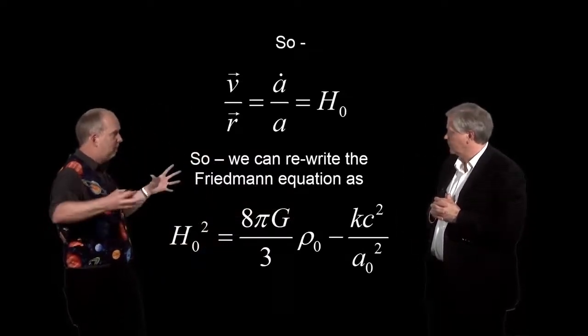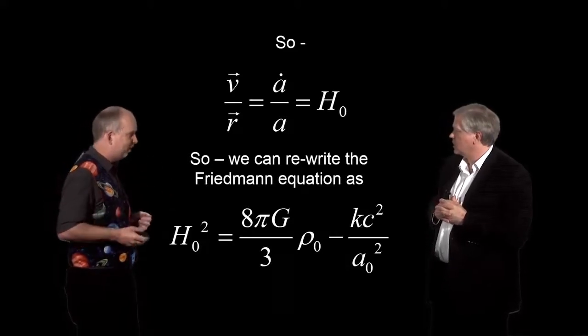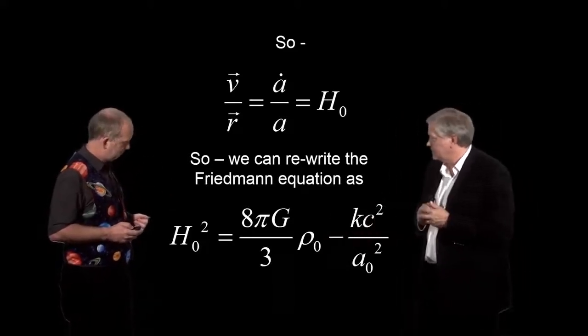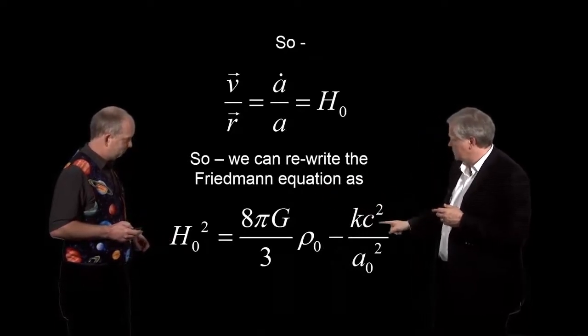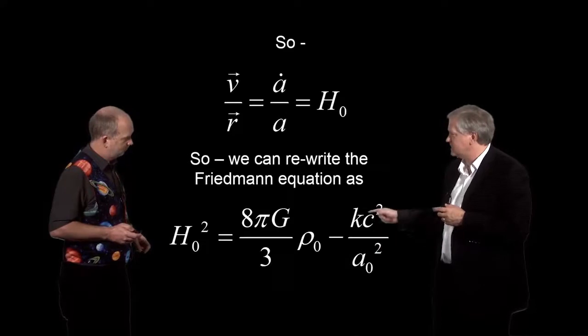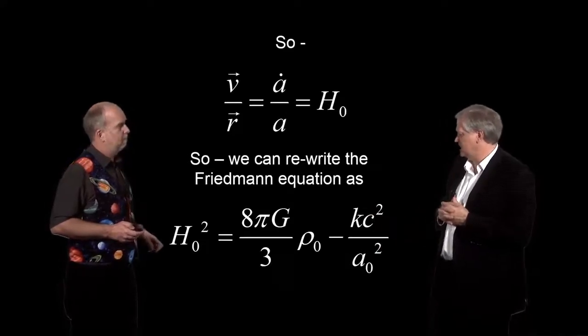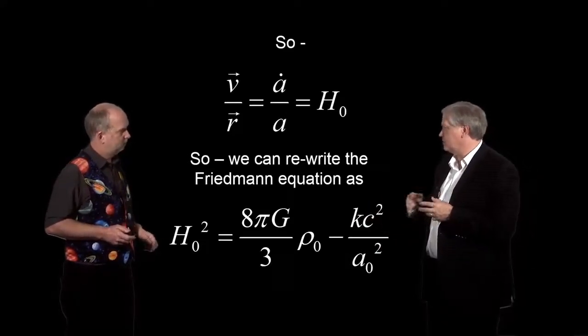We could, in principle, work it out by trying to measure pi in a really large scale, but that's pretty hard. If we measured the density right now, if we measured the Hubble constant, then we could presumably solve for what this is, and that would potentially give us an idea of how to measure k.